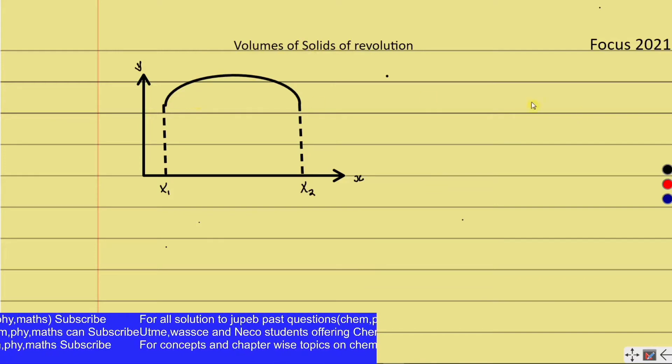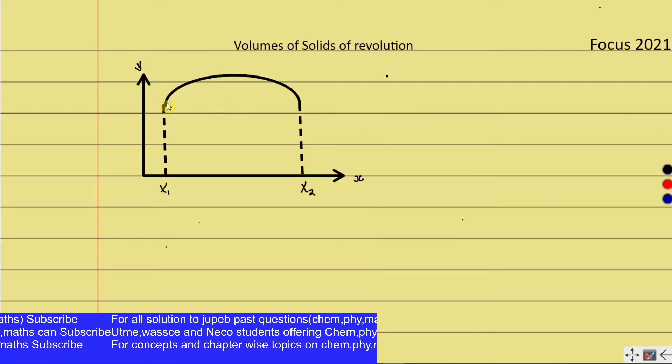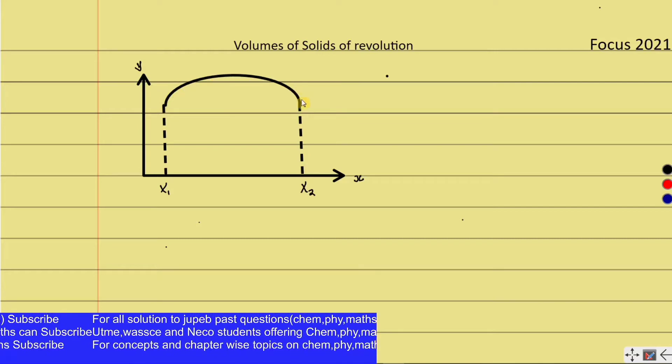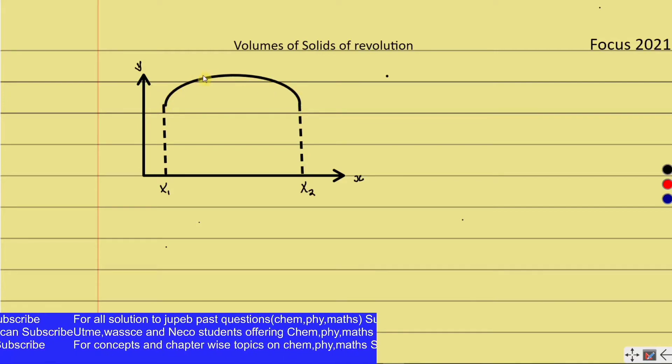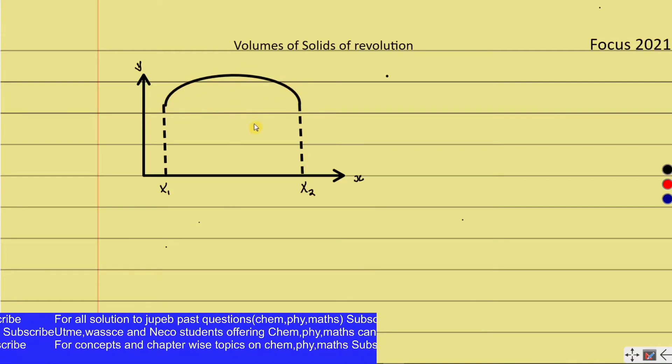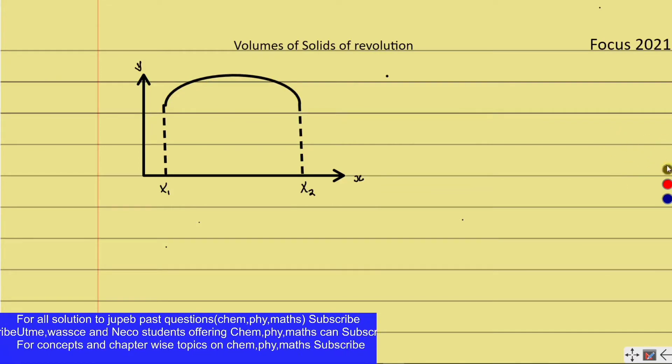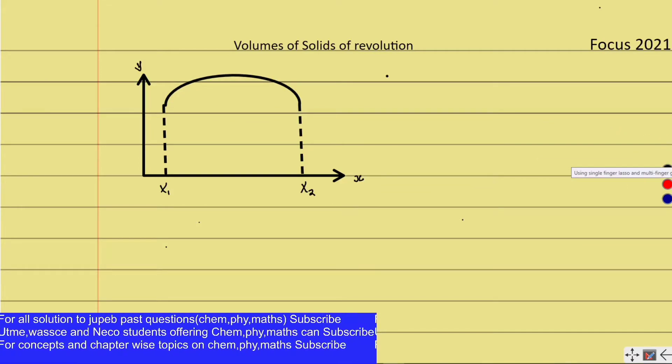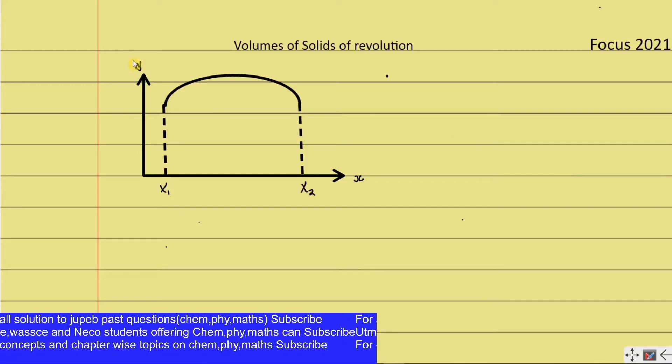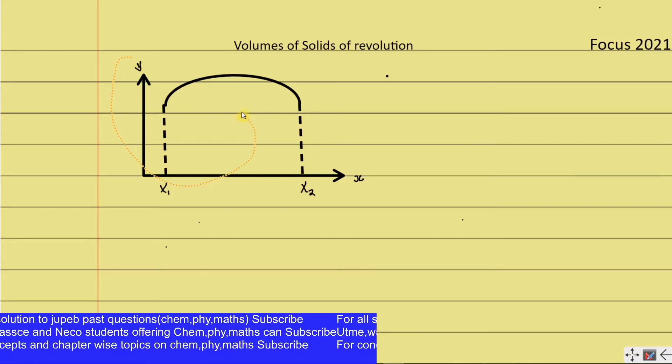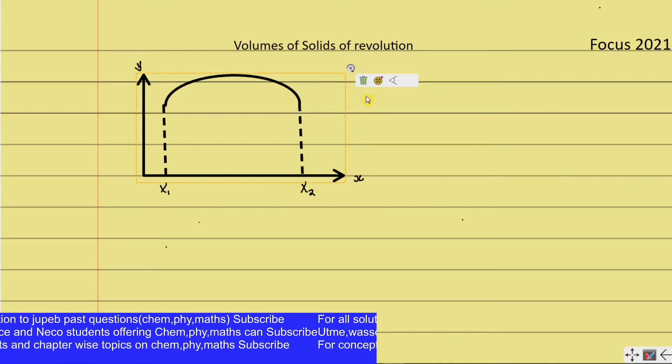As you can see in this figure, we have a shape here which we cannot identify the type. What we study is that if we allow this particular shape to rotate about its axis...